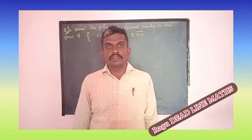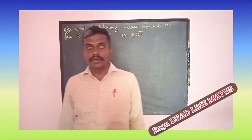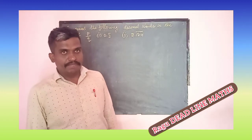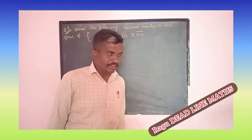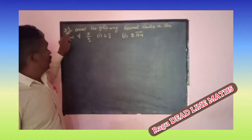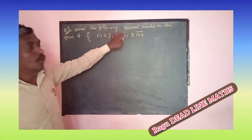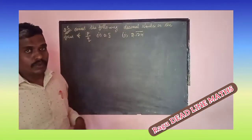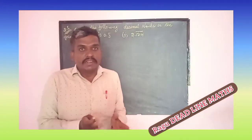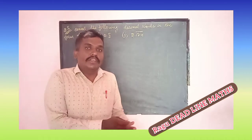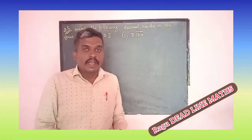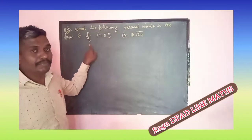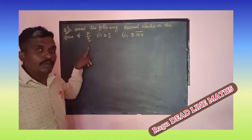Good morning students. In this video we will see Real Numbers, 9th standard. Example 2.5: convert the following decimals in the form of P by Q. They are given as decimals and we have to convert into the form of P by Q, where P by Q means numerator and denominator.